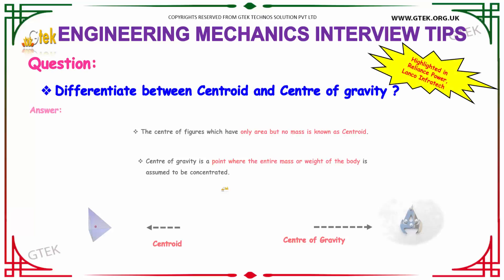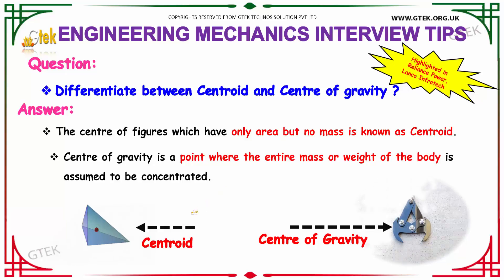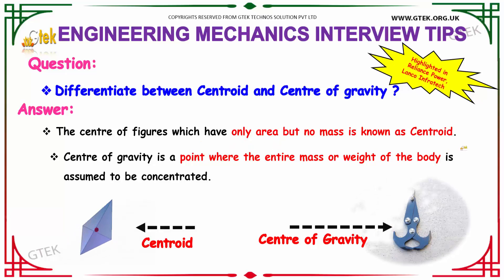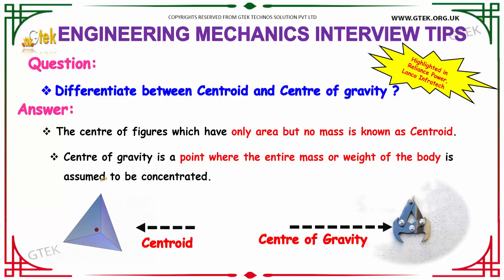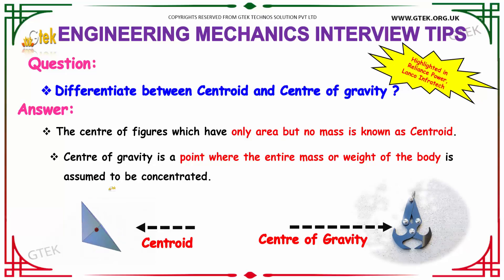Differentiate between centroid and centre of gravity. The centre of figures which have only area but no mass is known as the centroid. Centre of gravity is a point where the entire mass or weight of the body is assumed to be concentrated. This is the difference between centroid and centre of gravity.